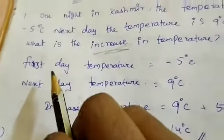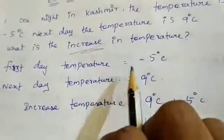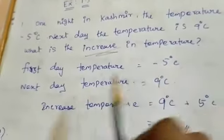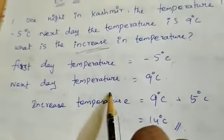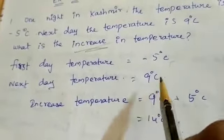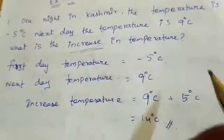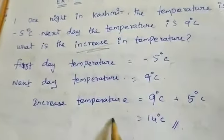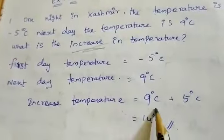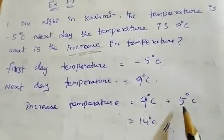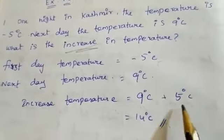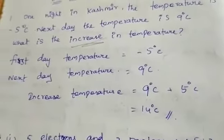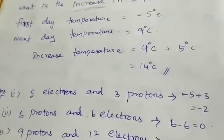Solution: first day temperature is minus 5 degrees Celsius. Next day temperature is equal to 9 degrees Celsius. Increase in temperature means addition. So increase in temperature: 9 degrees Celsius plus 5 degrees Celsius that is equal to 14 degrees Celsius.